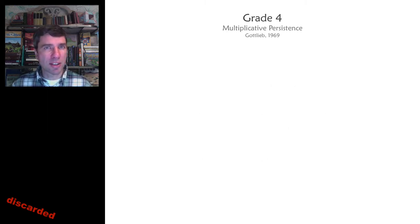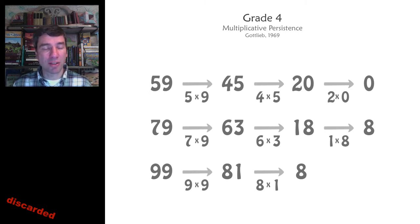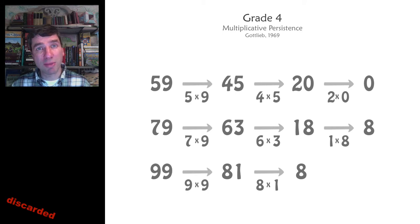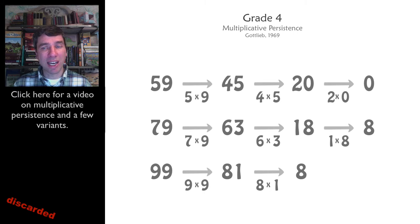Another interesting way to give your students practice with multiplication is through multiplicative persistence. You take the digits of a number and multiply them together. So 59 goes to 5 times 9, which is 45. Then 45 goes to 4 times 5, which is 20. Then 20 goes to 2 times 0, which is 0. There have been 3 steps from 59 to reach 0, so the multiplicative persistence of 59 is 3.